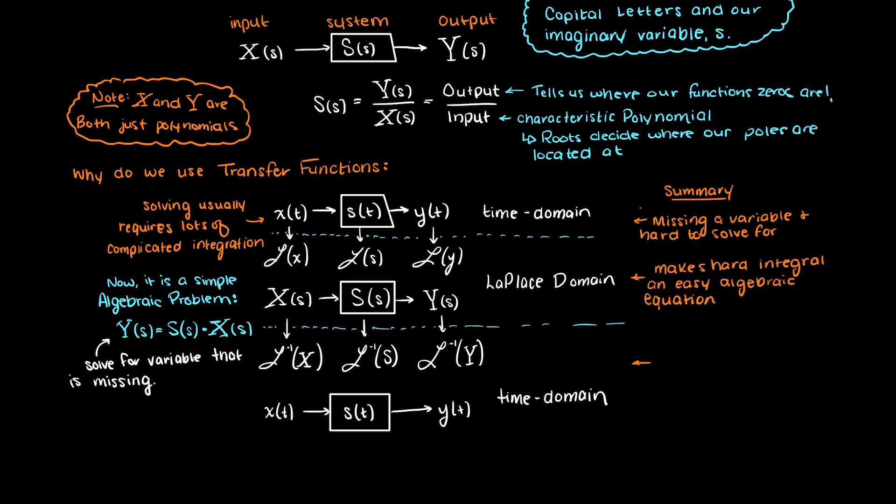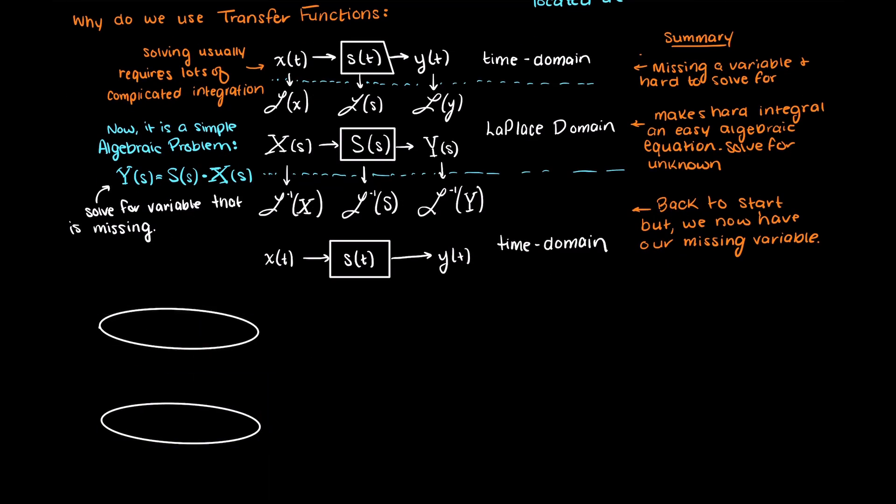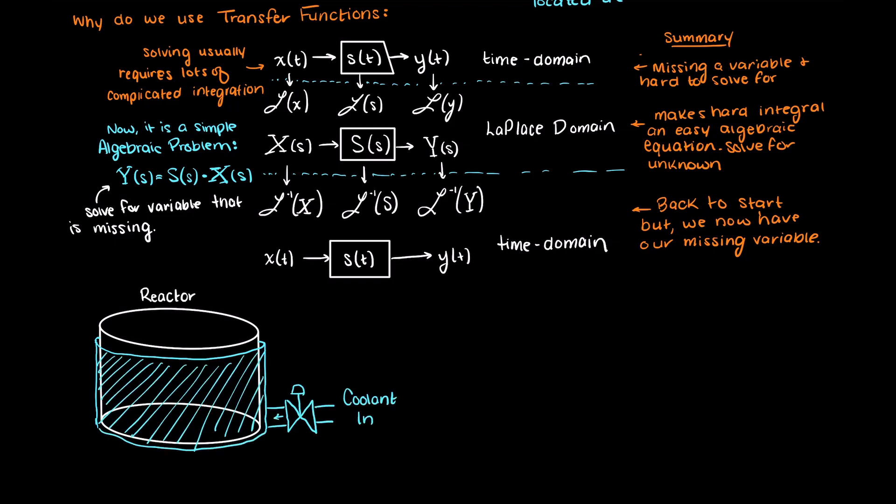So, for example, if we wanted to study a reactor's temperature change with altering coolant flow rates, we could create a model for that. Then our transfer function would tell us the ratio between our input change, that being the coolant change, versus the output, which is the reactor's temperature.